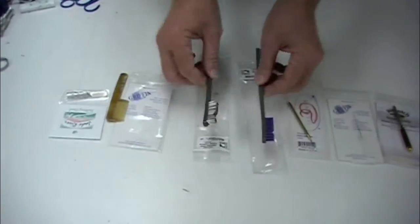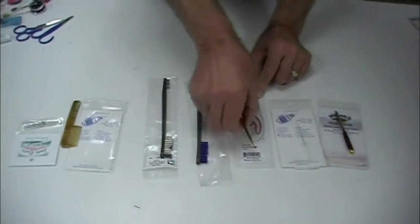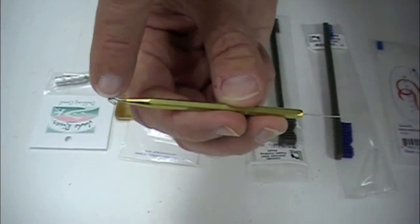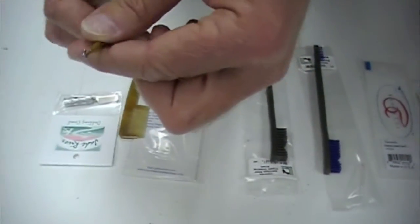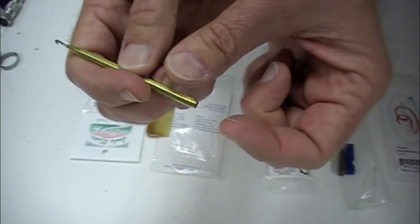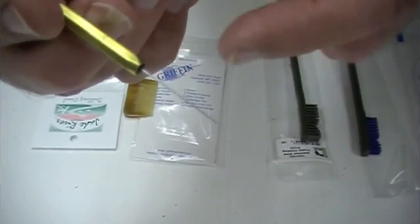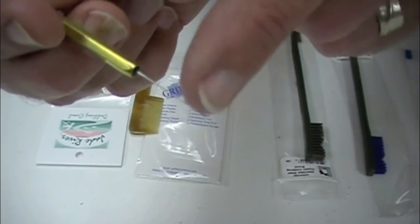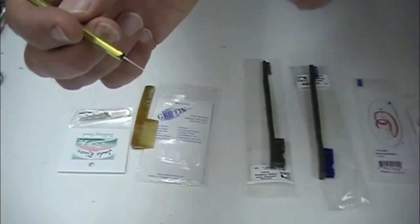People really like these tools. Here is a Renzetti. This has a dubbing hook on one end for spinning your dubbing loop, and it has this, called a dubbing picker. I would consider this for fine materials, small flies, not big stuff.